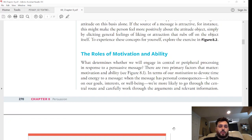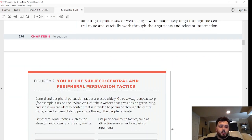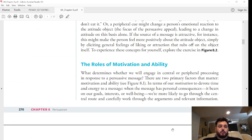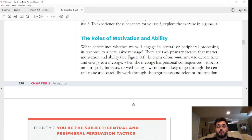The roles of motivation and ability: this is going to be a central question to this chapter and to what we're talking about. What determines whether we will engage in central or peripheral processing in response to a persuasive message? There are two primary factors that matter: motivation and ability. In terms of our motivation to devote time and energy to a message, when the message has personal consequences, it bears on our goals, interests, or well-being, we're more likely to go through the central route and carefully work through the arguments and relevant information.